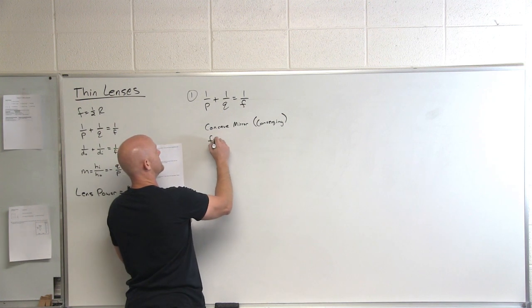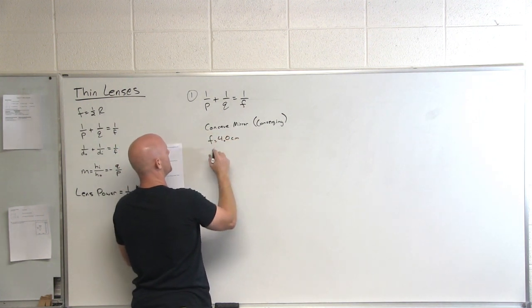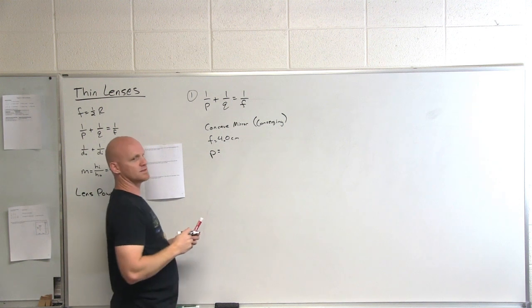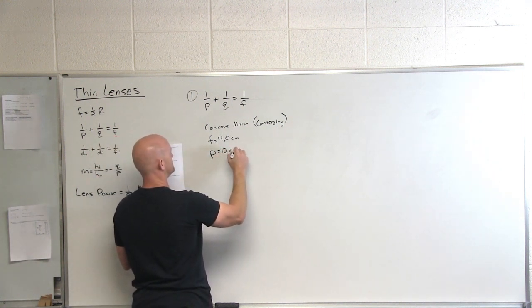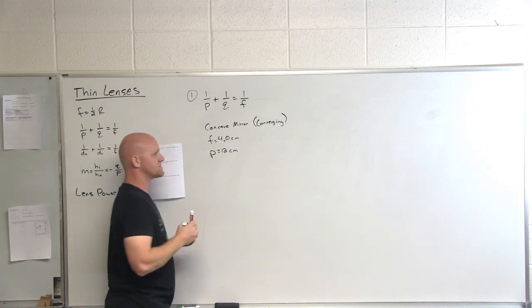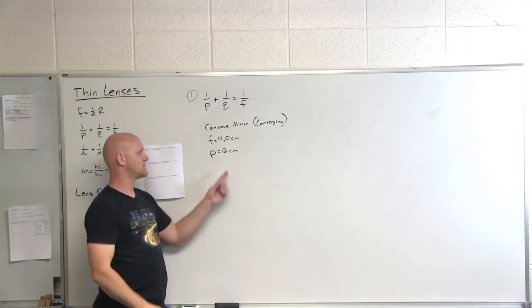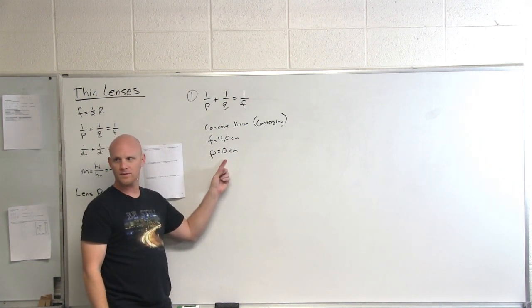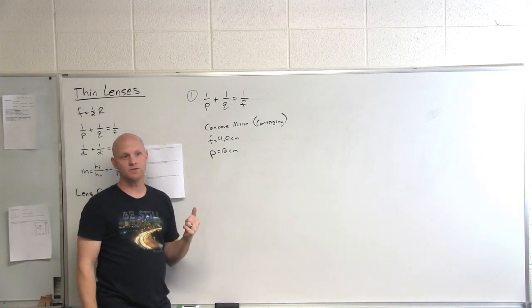In this case, the focal distance is given as 4 centimeters, and the object distance is 12 centimeters. So at this point we're beyond the focal distance. In fact, we're not only beyond the focal distance — we're also beyond the radius of curvature.